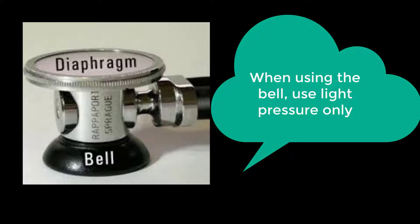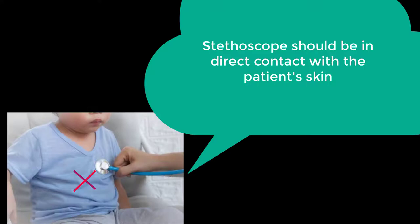The bell is best to detect low-frequency gallop sounds of S3 and S4. Third, resist the temptation to examine for heart sounds through clothing. For maximal auscultatory appreciation of sounds, the stethoscope should be in contact with the patient's skin.